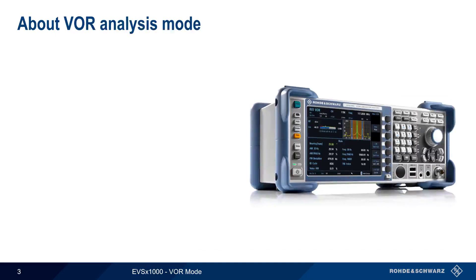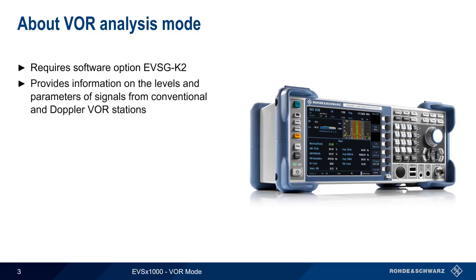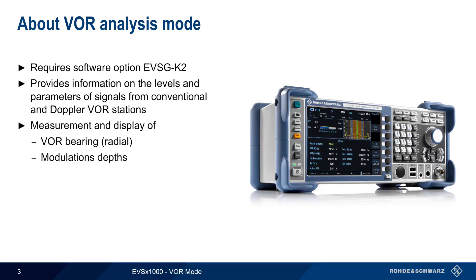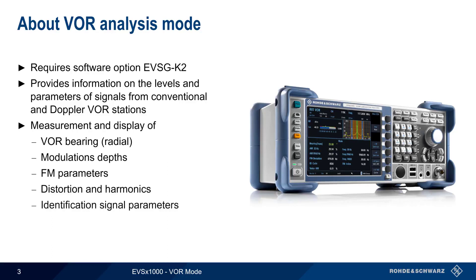VOR analysis is enabled by Software Option K2 and provides information on signals from both conventional as well as Doppler VOR stations. These measurements include the derived VOR bearing or radial, various modulation depth measurements, parameters of the FM signal components, distortion and harmonics, and information on the COM/ID signal. Measurement data can also be recorded for viewing on the EVS or for external analysis.